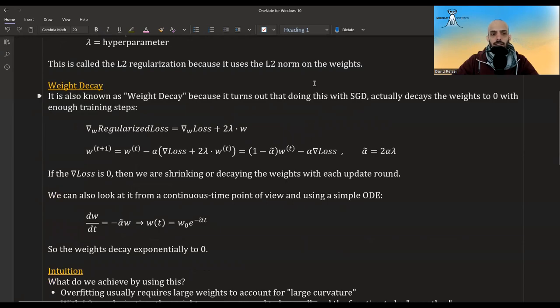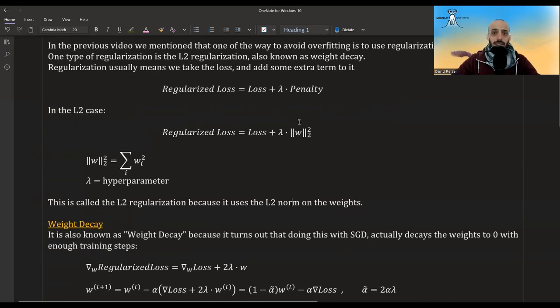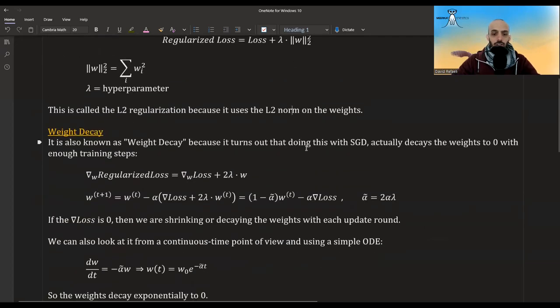It turns out that if you do this with stochastic gradient descent or any of its variants, you're shrinking the weights in each turn, or at least the effects of the penalty of the regularization is shrinking the loss.